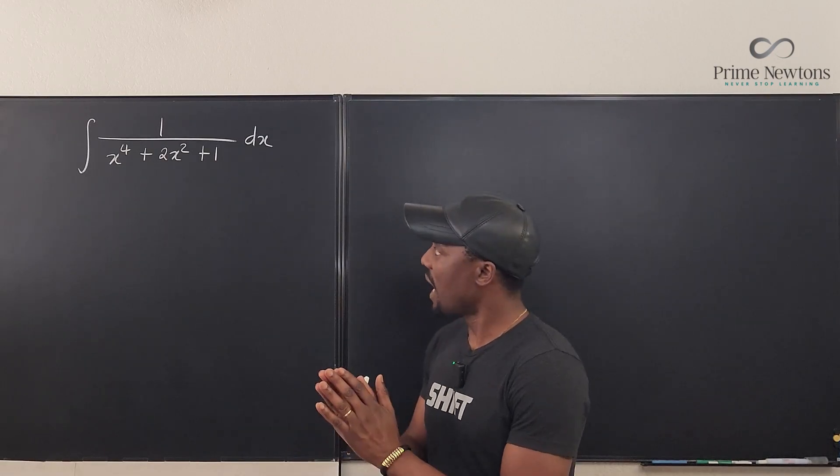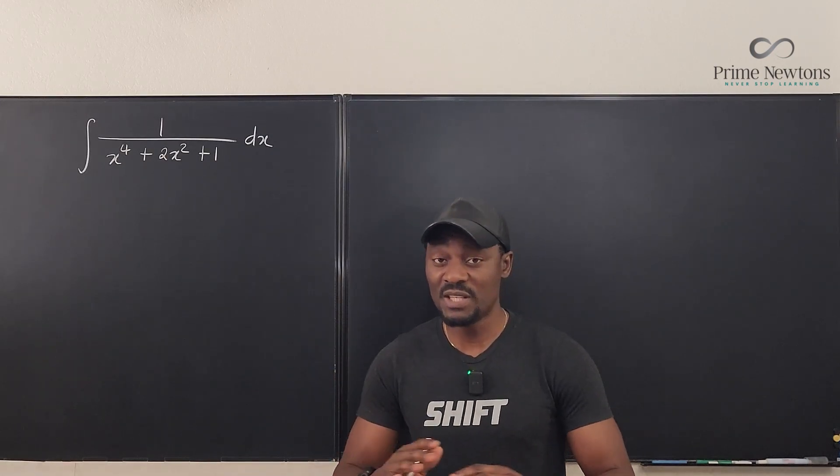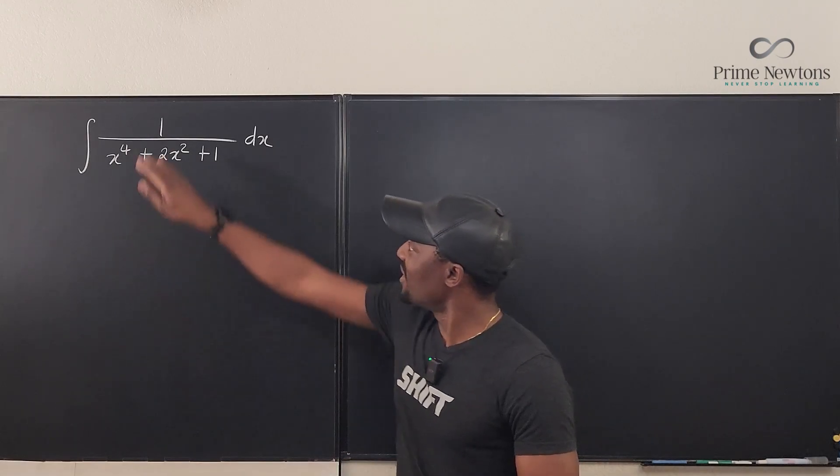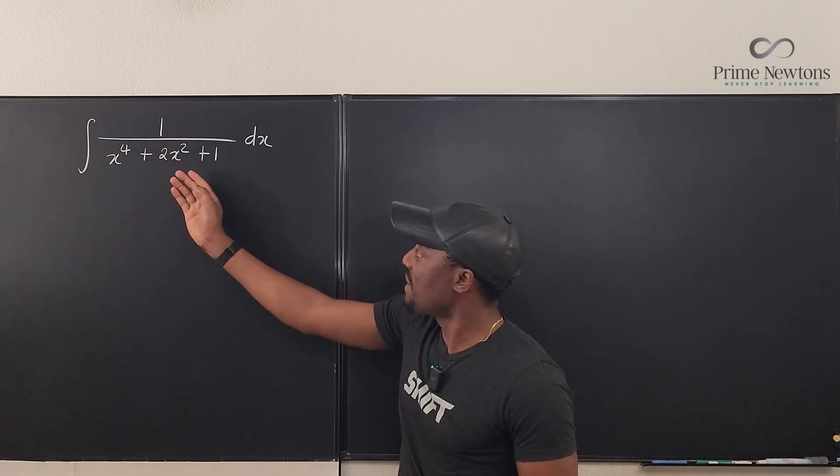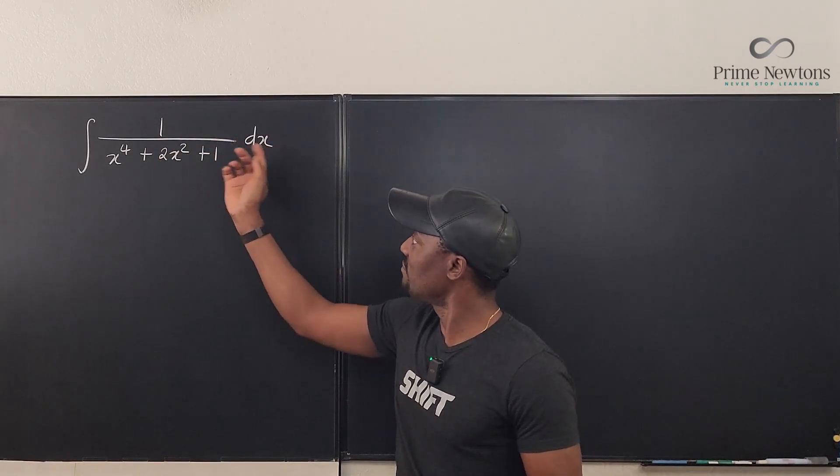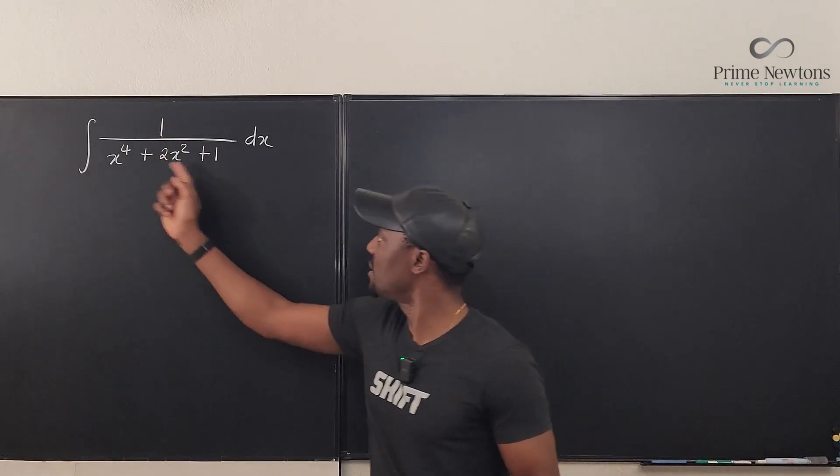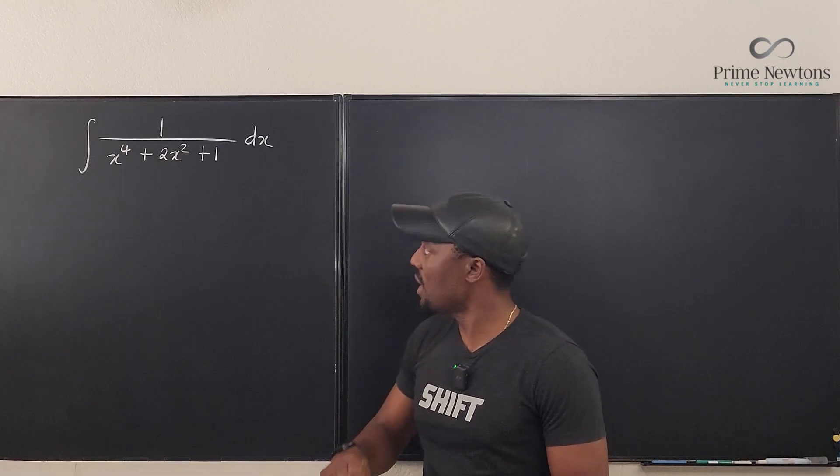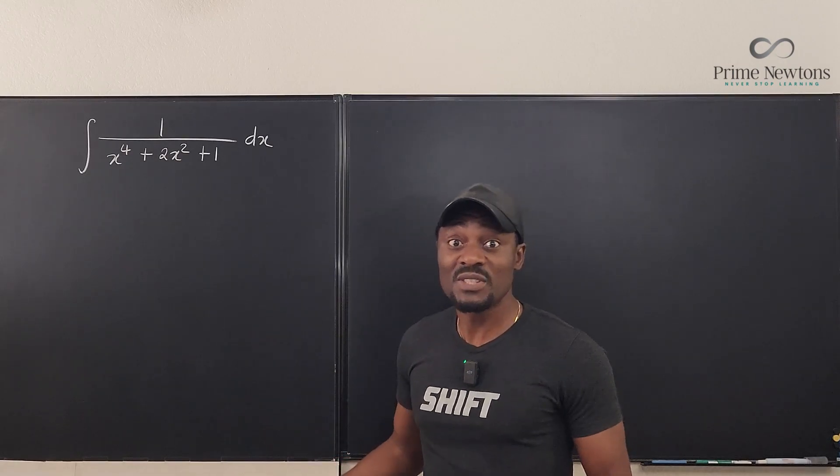I look at this and I know that u-substitution is out of the question because there is nothing on top. If I make this my u and I get a derivative, I can't - this is just one. The derivative of the bottom is not one. So I know u-substitution doesn't work, or at least I don't see it.